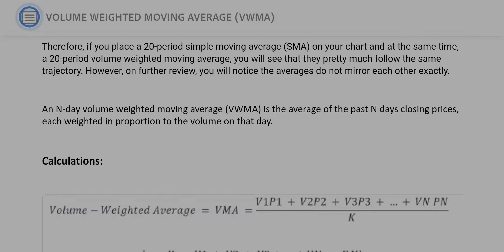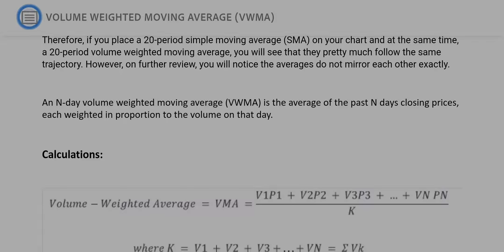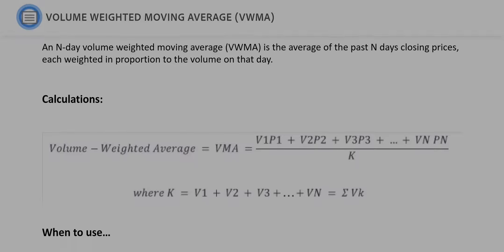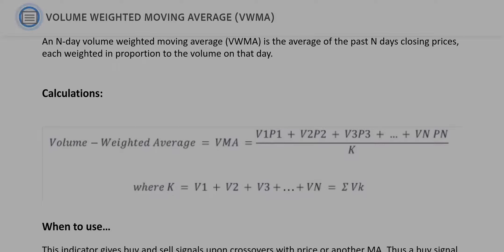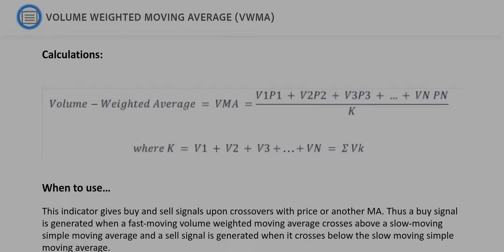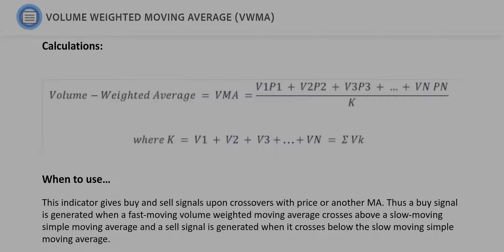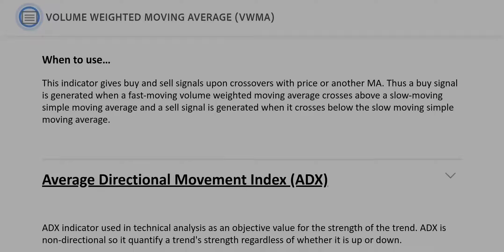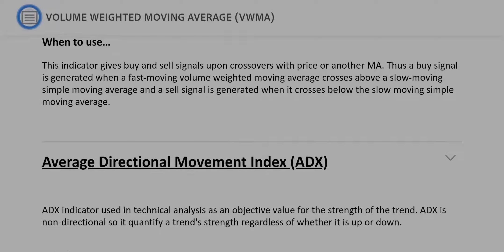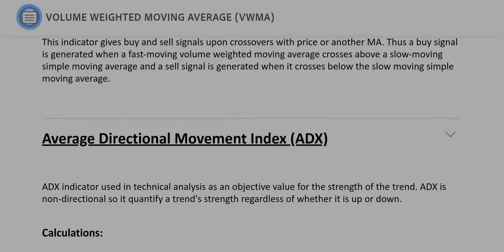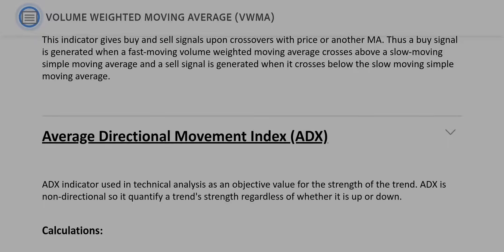However, on further review, you will notice the averages do not mirror each other exactly. An end-day volume weighted moving average (VWMA) is the average of the past end-day's closing prices, each weighted in proportion to the volume on that day. This indicator gives buy and sell signals upon crossovers with price or another moving average. A buy signal is generated when a fast-moving VWMA crosses above a slow-moving simple moving average, and a sell signal is generated when it crosses below the slow-moving simple moving average.